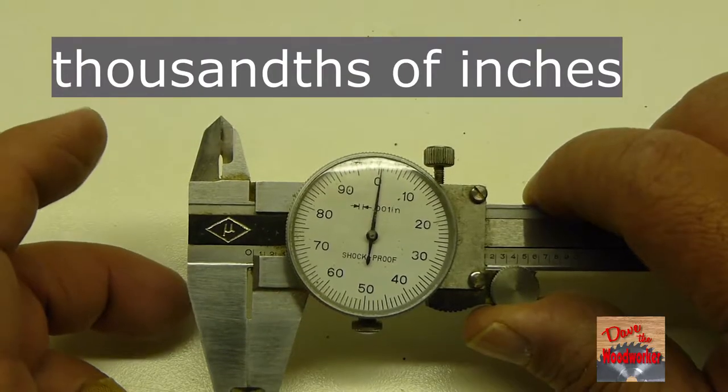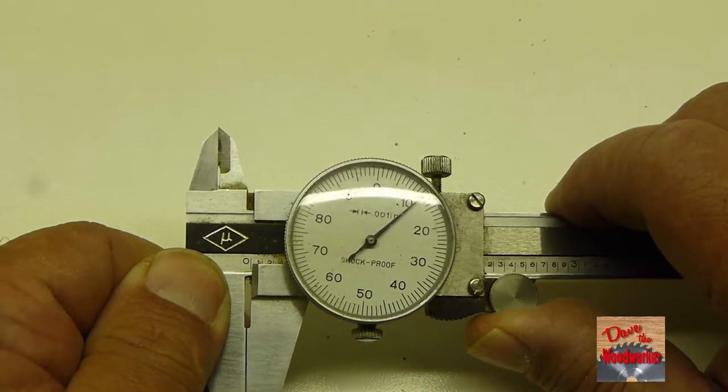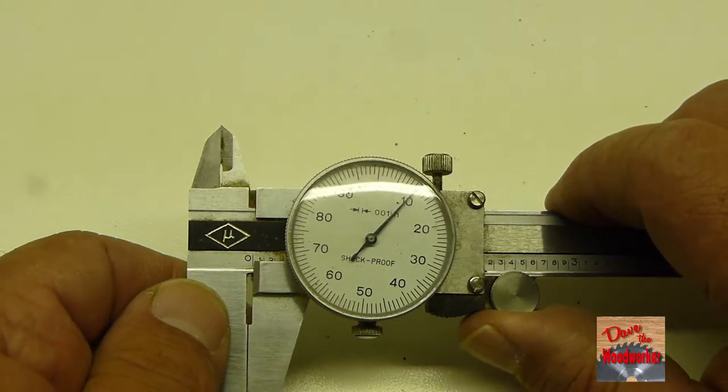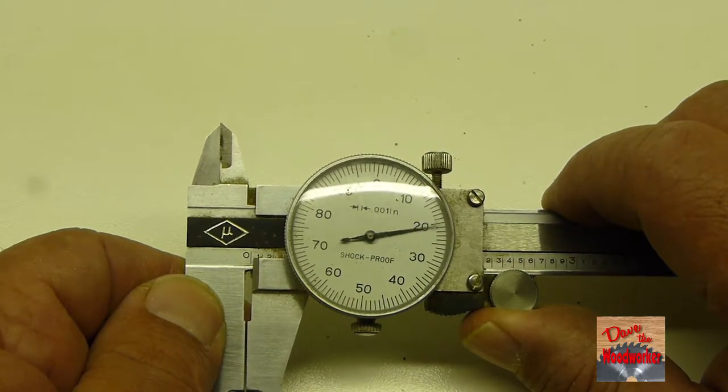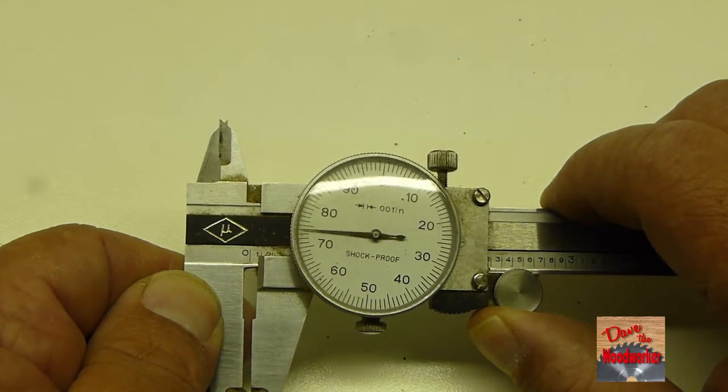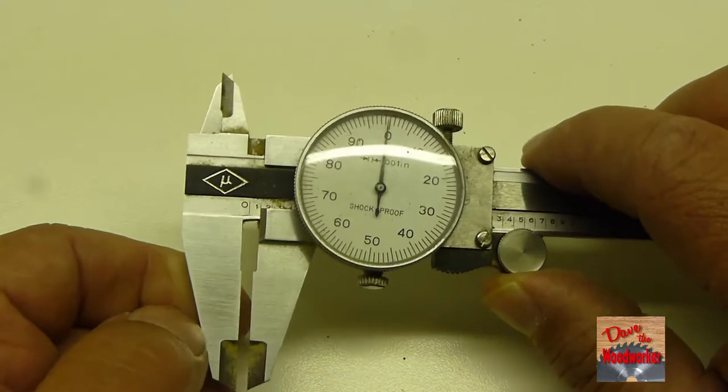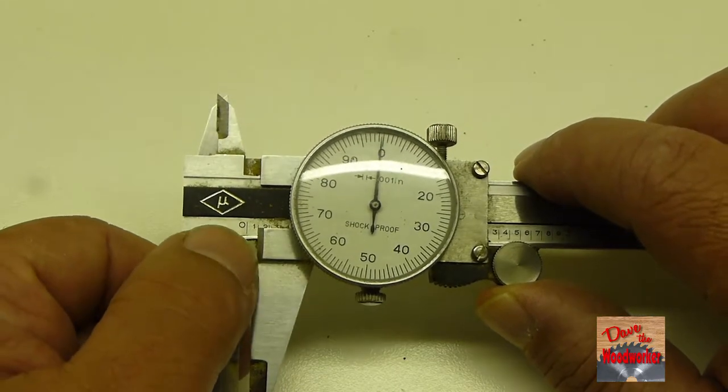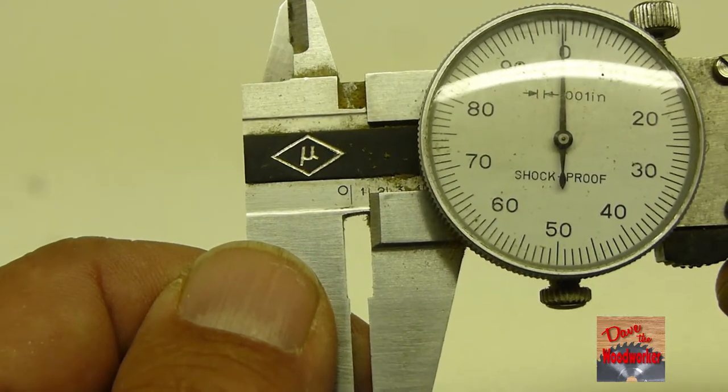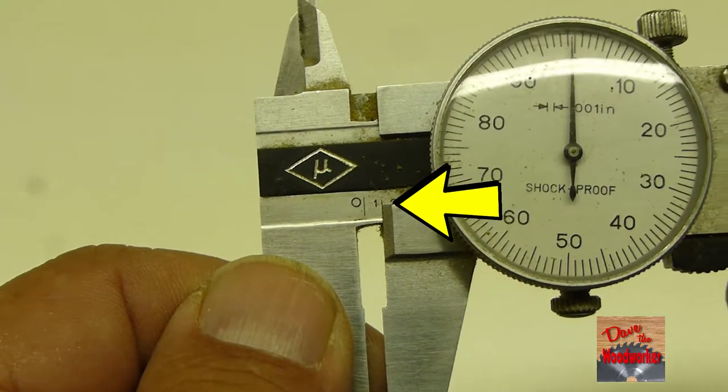A dial caliper is in thousandths of inches. If I move it to the ten here, that's ten thousandths. This is twenty thousandths, thirty thousandths and so on. Once you get back around, that's one hundred thousandths. And you can read down here too by the numbers. You see the one there. When you get to it, that's one hundred thousandths.